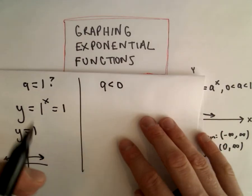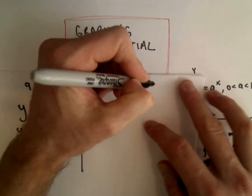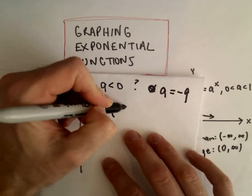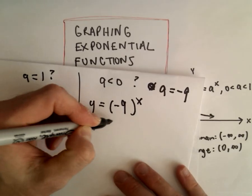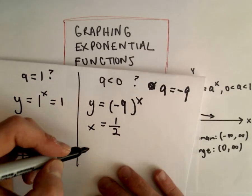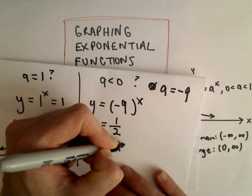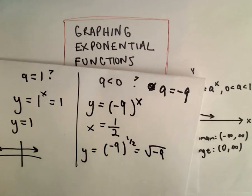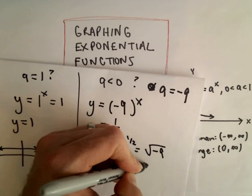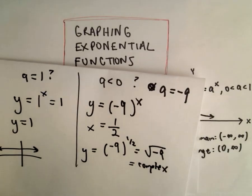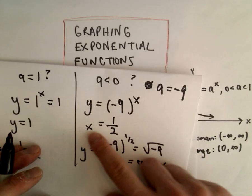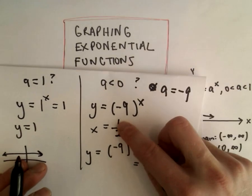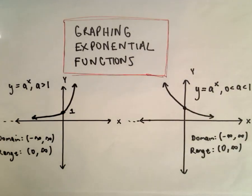Why don't we use negative numbers? Suppose we let A equal negative 9. Then we would have negative 9 raised to the power of X. If we put in X equals 1 half, we have Y equals negative 9 raised to the 1 half power, which is the square root of negative 9, and that's a complex or imaginary number — we want the outputs to be real numbers. So that's why we don't use negative numbers either; there are a lot of issues with fractions and roots.